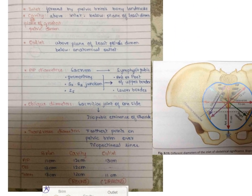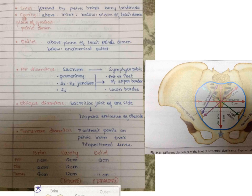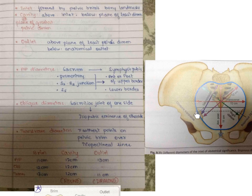For oblique diameters, the measurement is taken from the sacroiliac joint on one side to the iliopubic eminence on the other side. For the transverse diameter, the farthest points on the pelvic rim lying over the iliopectineal lines are used.